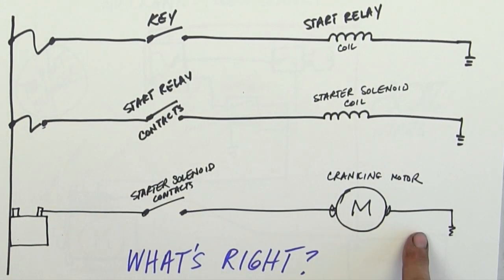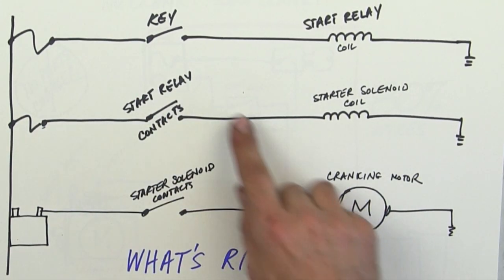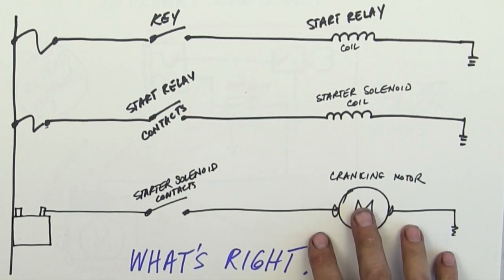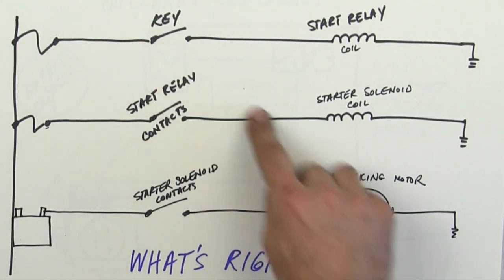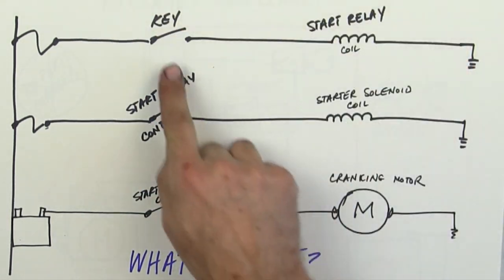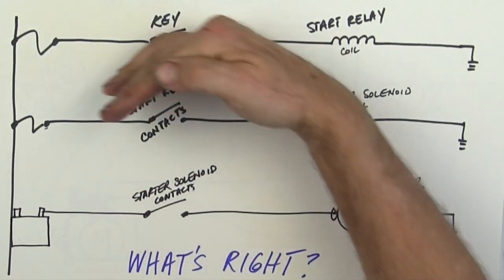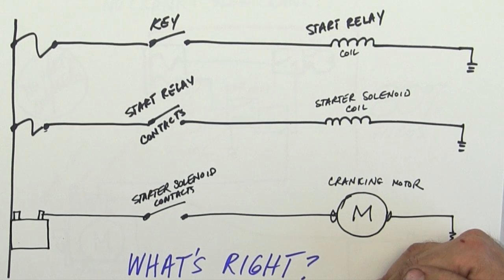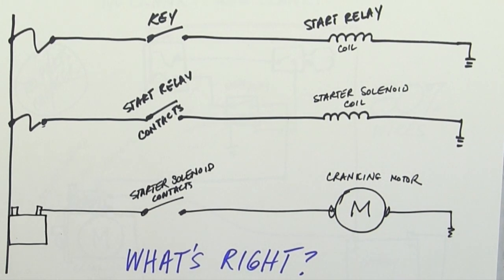But my methodology is I want to start as far away from the cranking motor as possible. Because if I can start as far away from the cranking motor as possible, then that means as soon as I hit something that's working, then I get to rule out everything else. So if you want to be fast at this, you need to be methodical. And if you're going to be methodical, you have to understand how the circuits work.